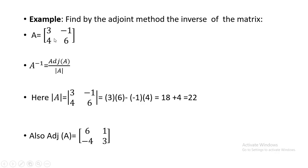For the off-diagonal elements, we change their signs. Initially it was minus 1, so for the adjoint of A it will be plus 1. This was plus 4, so for the adjoint it will be minus 4. This method of swapping diagonal positions and changing off-diagonal signs applies only for a 2 by 2 matrix.